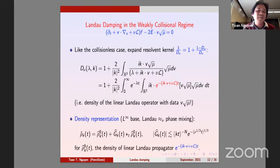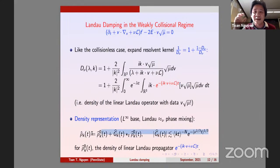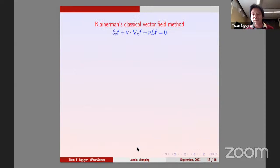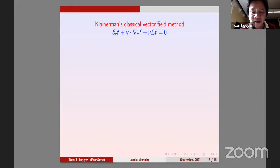With that we have a similar density representation: the density of Vlasov-Poisson-Landau equals the density of the free transport with Landau plus a small perturbation independent of nu. To get the decay from the semigroup, we use the classical Klainerman vector field method, introduced around 1982 to treat quasilinear wave equations.